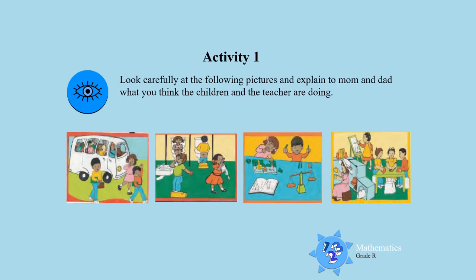Activity 1. Look carefully at the following pictures and explain to mom and dad what you think the children and the teacher are doing. Look at each picture and tell mom and dad what they are doing.